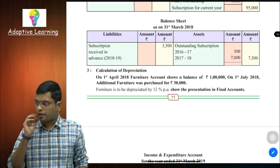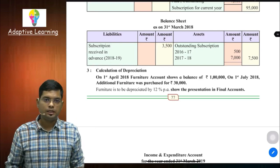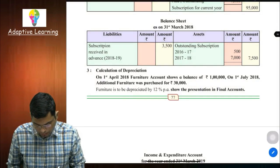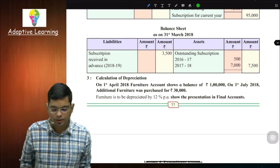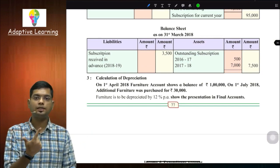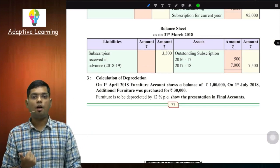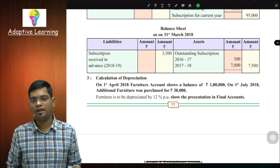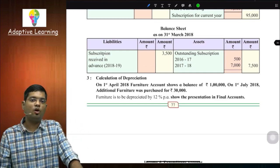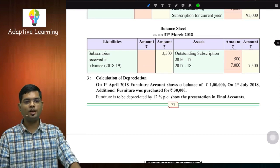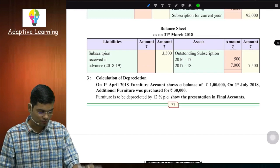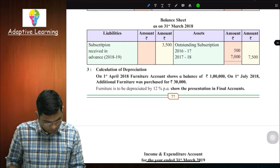आगे बढ़ते हैं - अभी question number 3 पर आ रहे हैं। अब तक हमने stock of stationery और subscription के बारे में पढ़ा था। अब यहाँ depreciation के बारे में सीखेंगे। ऐसा नहीं है कि यह पहली बार कर रहे हो - final accounts में depreciation आपने किया हुआ है, कुछ नया नहीं है। यह पूरा chapter class 11 में था।